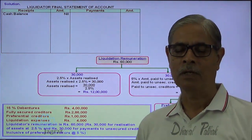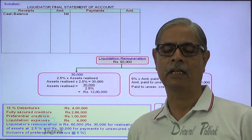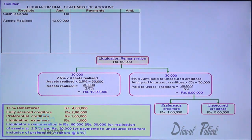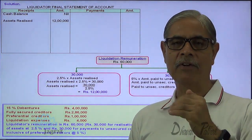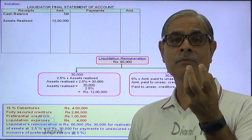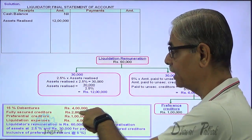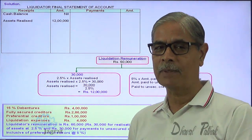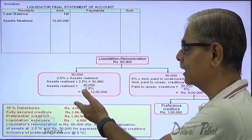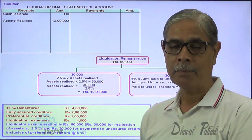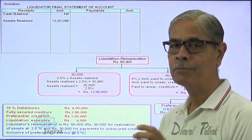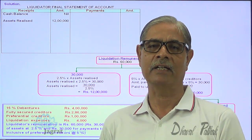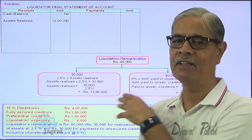This is how the indirect information required for preparing the liquidator's statement is worked out. Assets realized are 12,00,000. Payment made to creditors including preferential creditors is 6,00,000, leaving 6,00,000. From that 6,00,000, we have to pay debenture holders 4,00,000, fully secured creditors 2,86,000, and liquidation expenses 4,000 — a payment of more than 6,00,000. This means we are required to demand a last call from the equity shareholders.